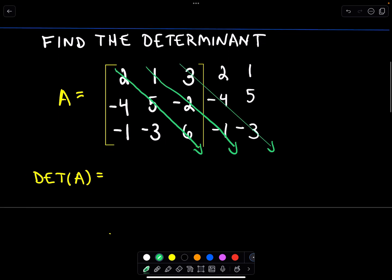So in this case, what I do now is I multiply the numbers along each arrow. So if I look at my first arrow, I've got those numbers 2 and 5 and 6, and we multiply those together. Now I put a plus sign in between when I go to the next arrow.